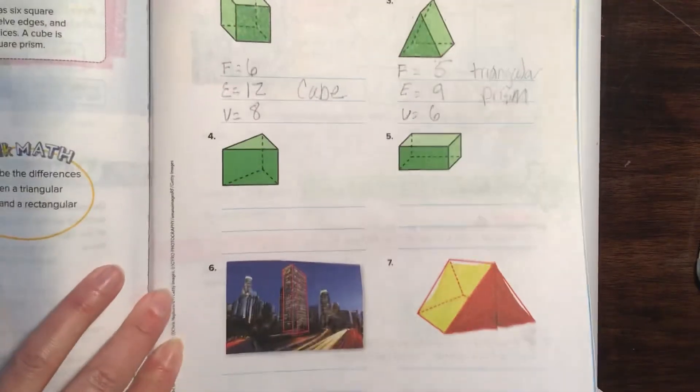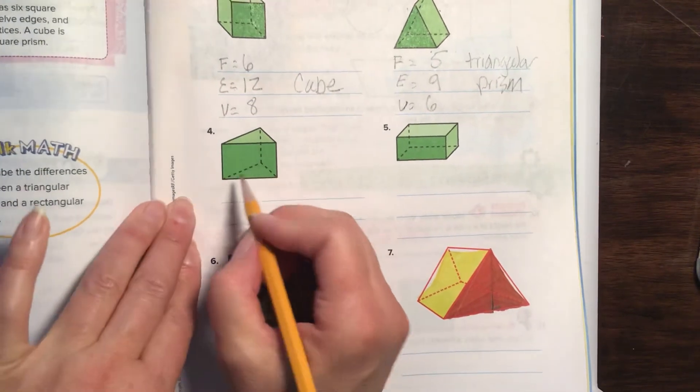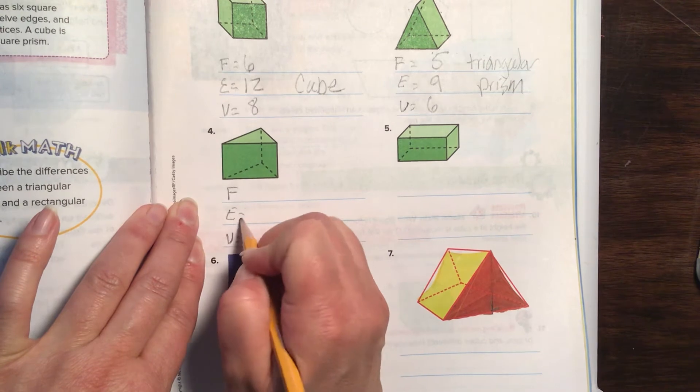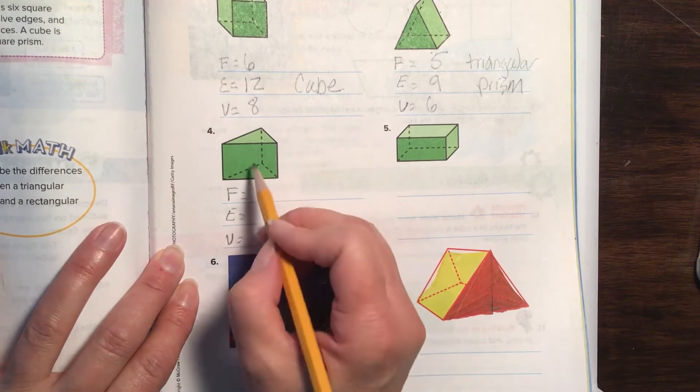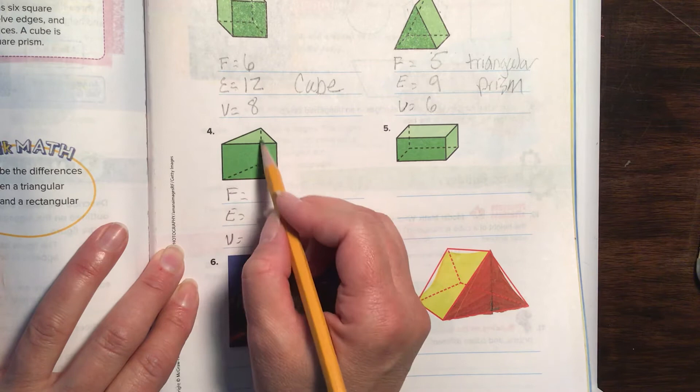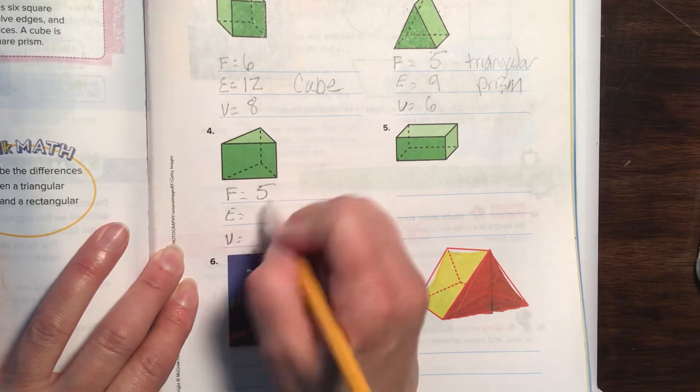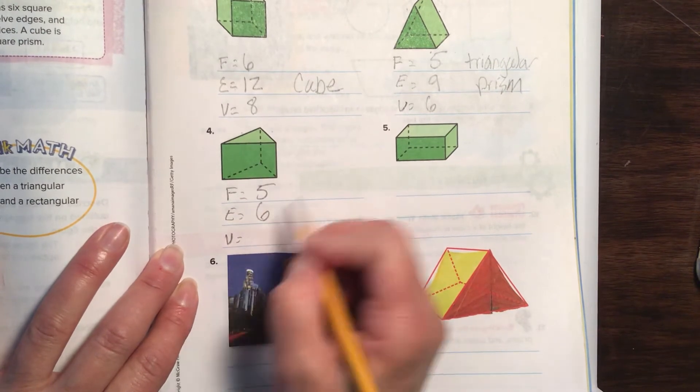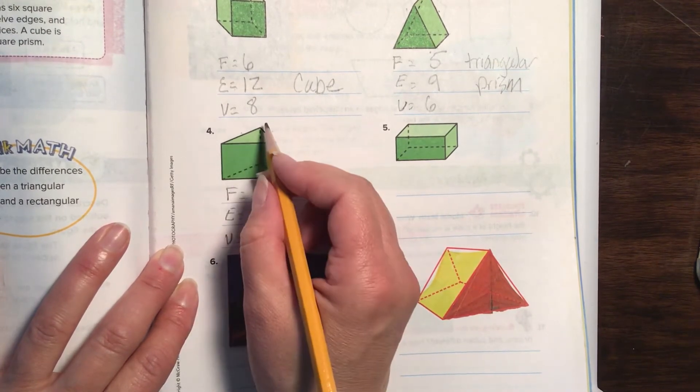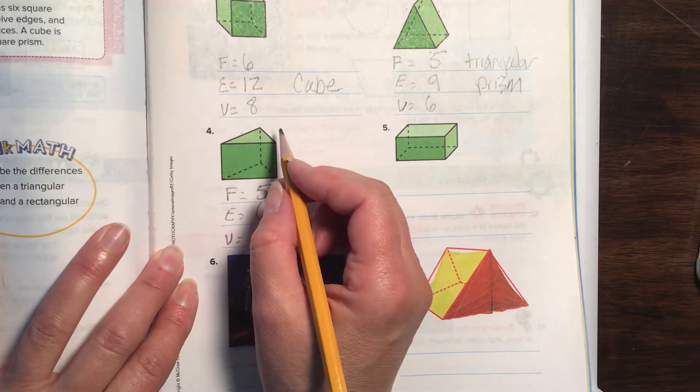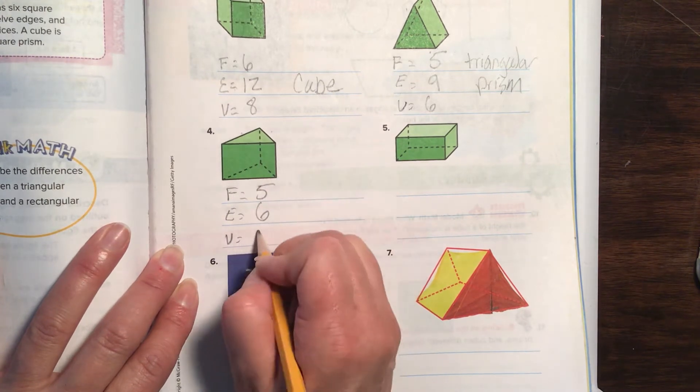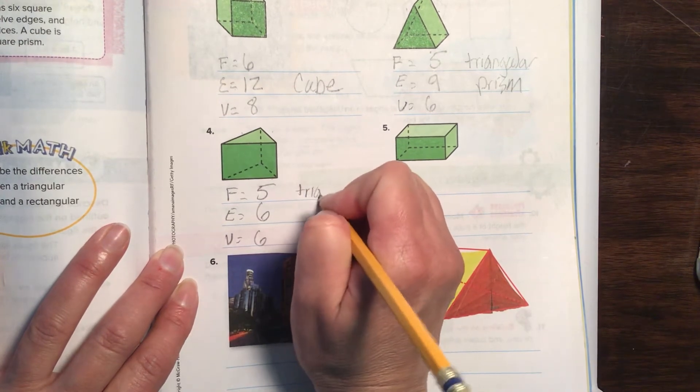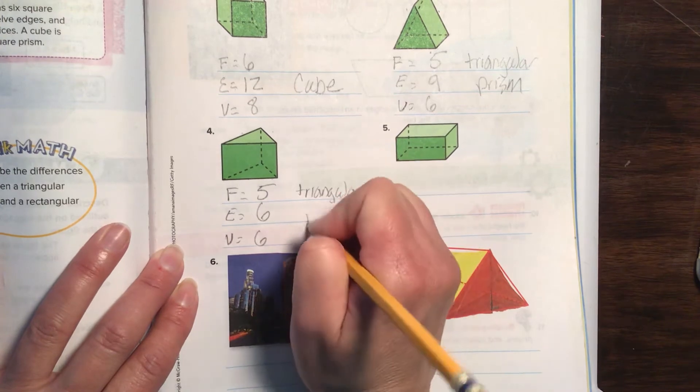Fabulous. Now we're on number four. Let's count faces, edges, and vertices. Let's count the faces on this thing: one, two, three, four, five. Five faces. Edges: one, two, three, four, five, six. And vertices or corners: one, two, three, four, five, six. Right? Yes. And what one does this fall into? Again, this is another triangular prism.